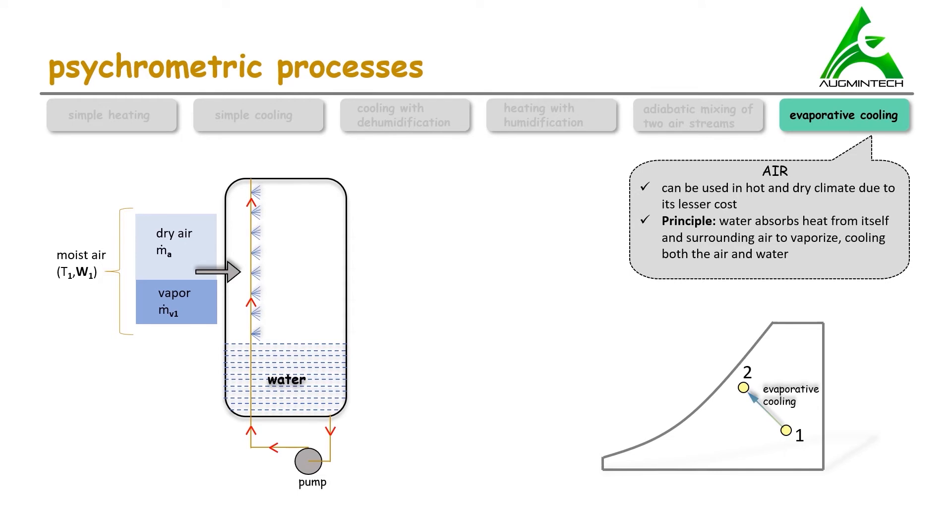When air passes through it, it gets cooled as well as its humidity increases. As the process continues, the level of water in the tank decreases. To make this up, there is some extra water added at regular intervals.